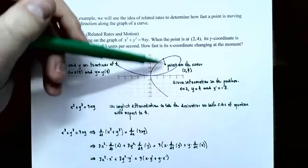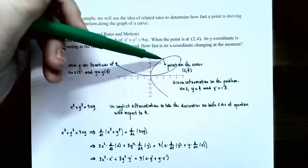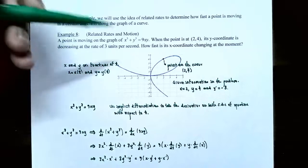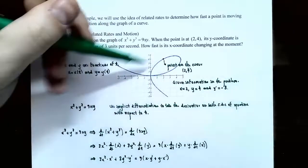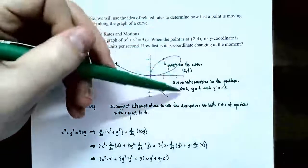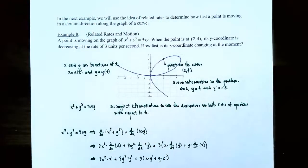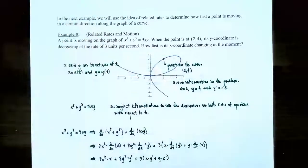The graph of x cubed plus y cubed equals 9xy is a curve — not a function, as it fails the vertical line test. This is an implicit equation that cannot easily be solved for y. The point (2, 4) is on the graph. The given information is: x equals 2, y equals 4, and y prime equals negative 3 units per second because the y coordinate is decreasing.